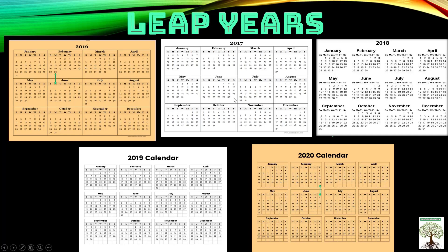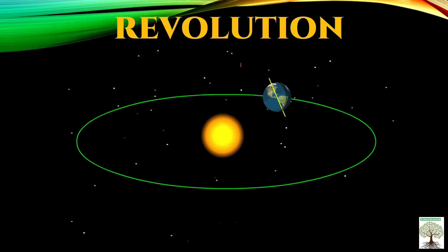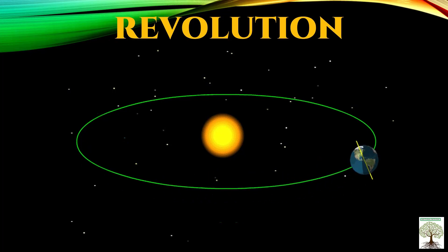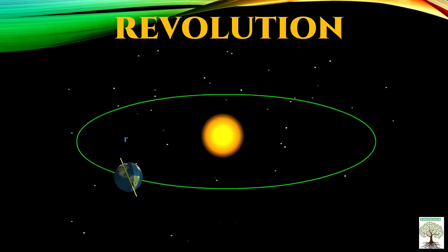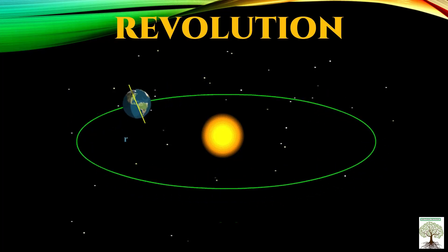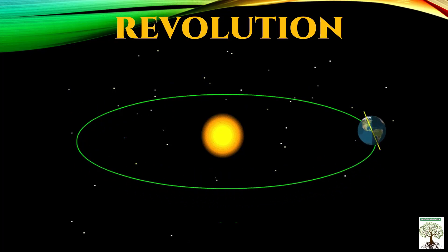So why does the leap year come every 4 years and not every 5 or 6 years? As we know, the Earth revolves around the sun in its orbital path, and it takes around 365 days plus 6 hours — that is one quarter of a day — to complete one revolution. However, the calendar would get awkward if we had a fractional number of days.